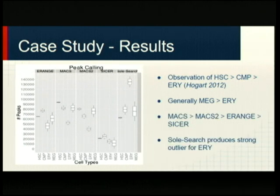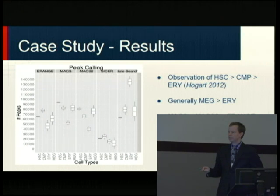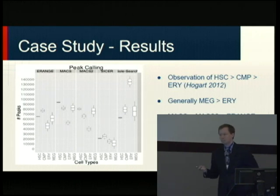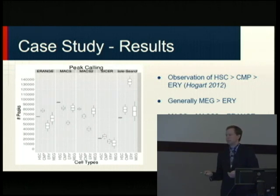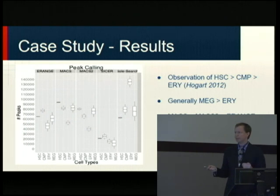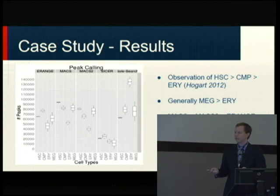We plotted five out of the 75 different tools and saw large variation in the number of sites predicted. For stem cells, erange predicts about 65,000 sites, MACS predicts a little more than 90,000, and MACS2 around 86,000. Generally, MACS predicted more peaks than MACS2 than erange and INCISORS. We also saw a pattern: HSCs have more peaks than CMPs than EOys — these are stem cells, an intermediate differentiation step, and red blood cells.